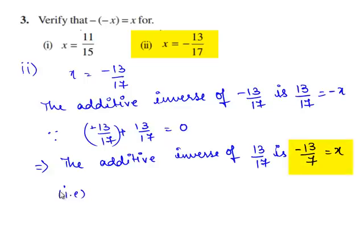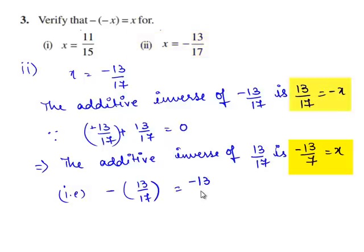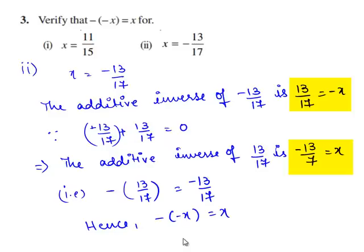That is, minus of 13 by 17 is equal to minus 13 by 17. Hence, minus of minus x is equal to x is verified.